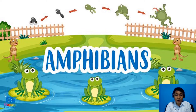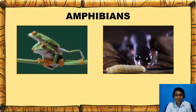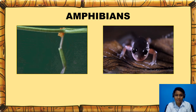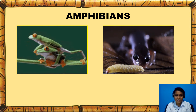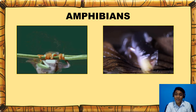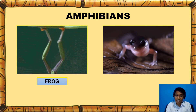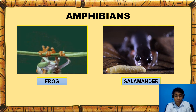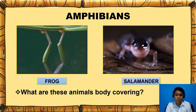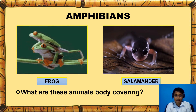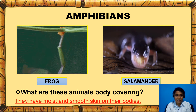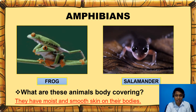And lastly, we have amphibians. Do you know these animals? Can you name them? Those are frogs and a salamander. Now, based on the picture, what are these animals' body covering? They have moist and smooth skin on their bodies.